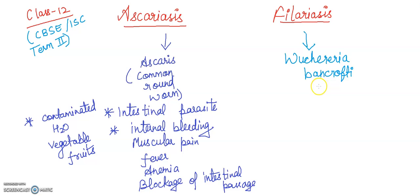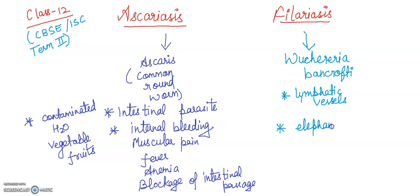The filarial worms cause a slowly developing chronic inflammation of the organs in which they live for many years — usually the lymphatic vessels of the lower limb. The disease is called Elephantiasis or Filariasis. The genital organs are also affected, resulting in gross deformities.